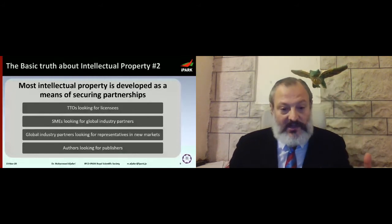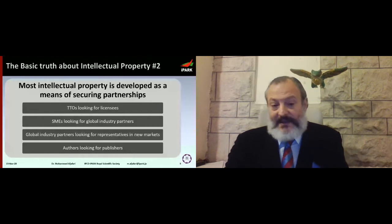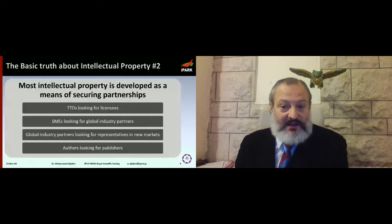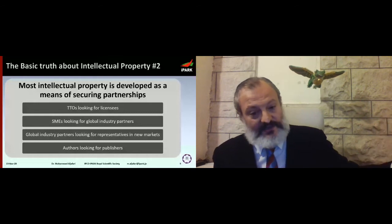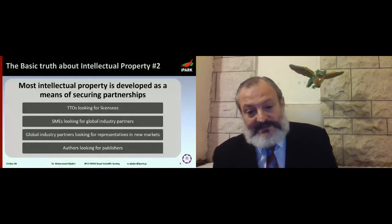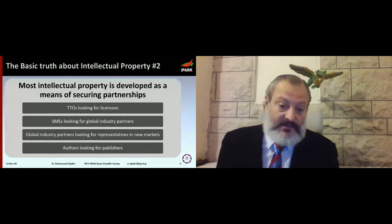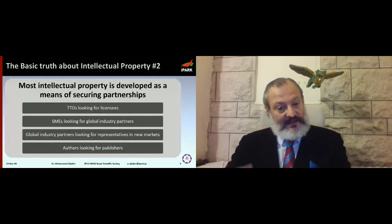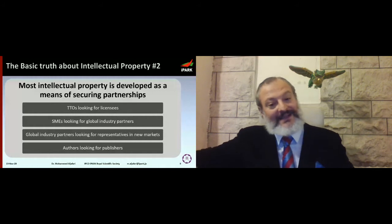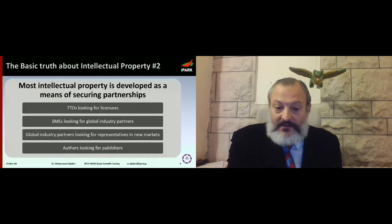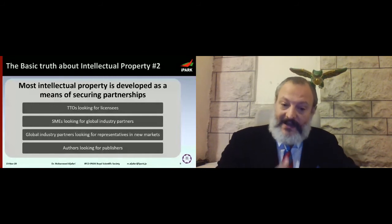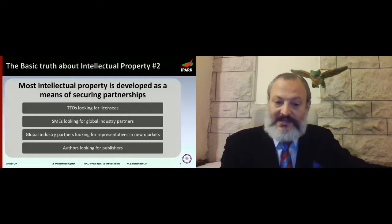However, this is not the most important role of intellectual property. Most of the time, intellectual property is developed — especially at universities — as a means to make a partnership, not just to protect yourself in a market. For example, if a university registers a patent for a new drug, the university doesn't make drugs, but they can give this patent to somebody who can — and that person will protect their market position through the patent the university obtained.